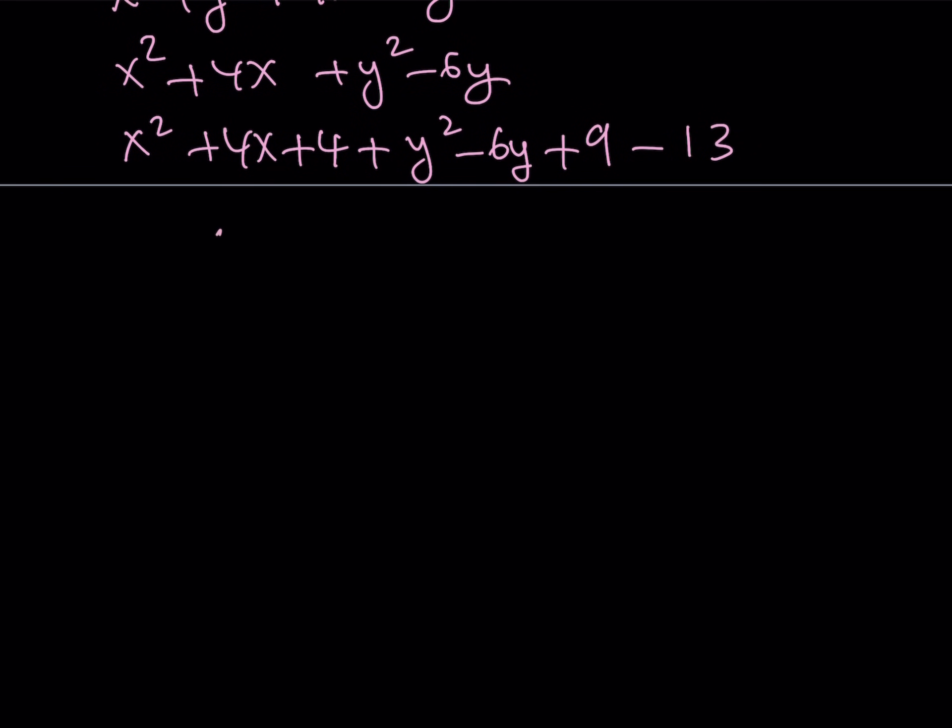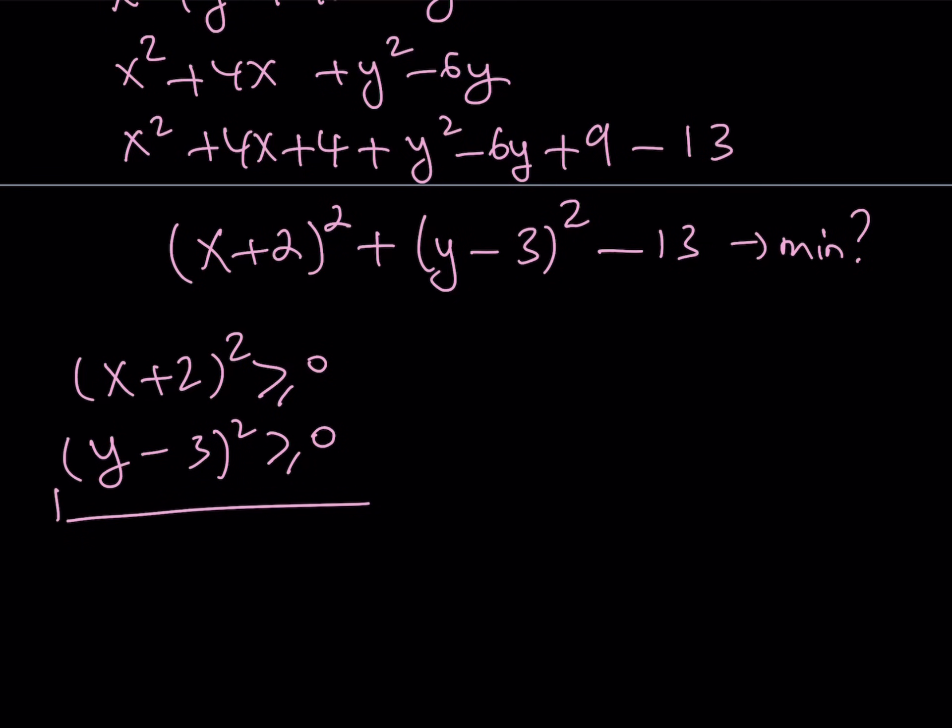Now I can write my expression as x plus 2 quantity squared plus y minus 3 quantity squared minus 13. Remember, this is the expression I'm trying to minimize. I'm trying to find a minimum value. And as you know, if x and y are real numbers, x plus 2 quantity squared is always greater than or equal to 0, y minus 3 quantity squared is always greater than or equal to 0, and their sum is also greater than or equal to 0.